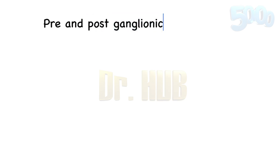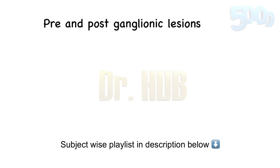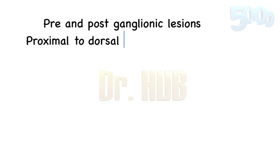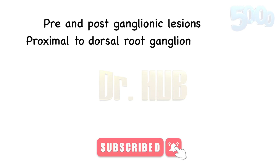Let's look into the pre and postganglionic lesions. In case of preganglionic lesions, it includes the proximal to the dorsal root ganglion — so it's proximal to the dorsal root ganglion. In case of postganglionic, it is distal to the dorsal root ganglion. So post is distal, pre is proximal to the dorsal root ganglia.